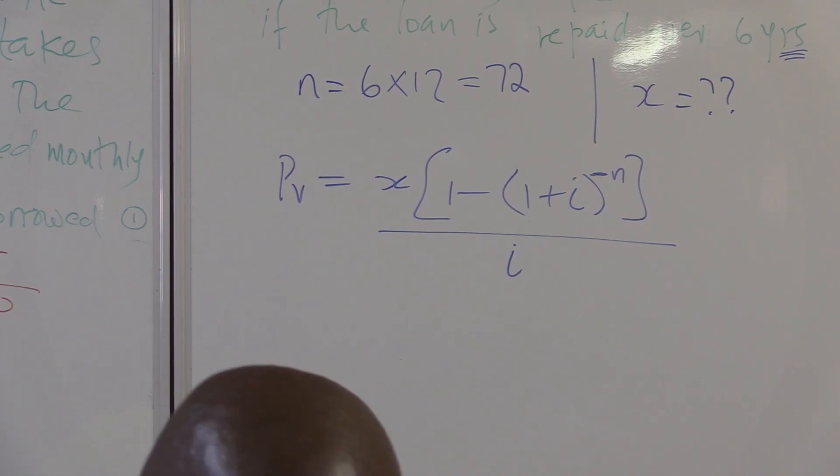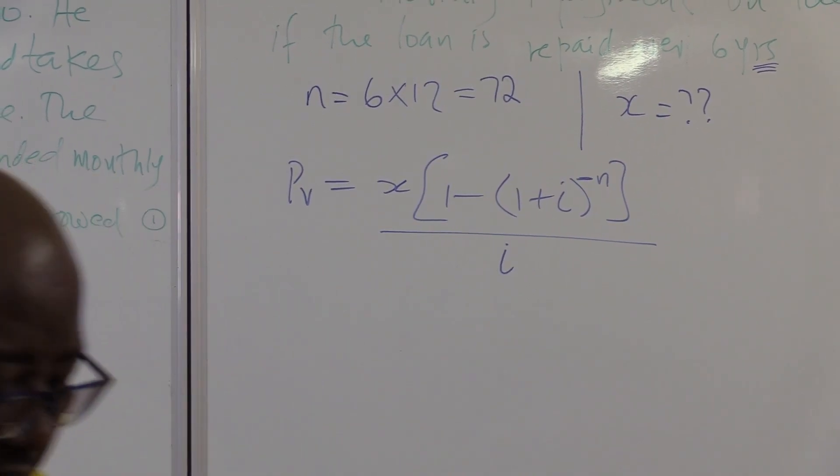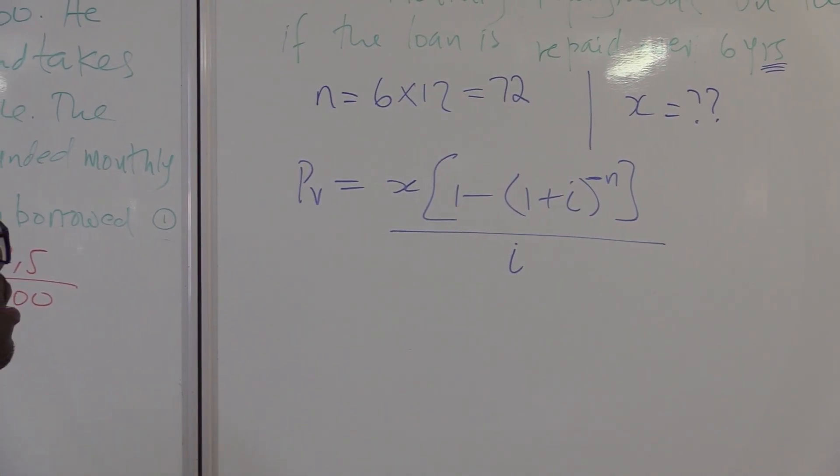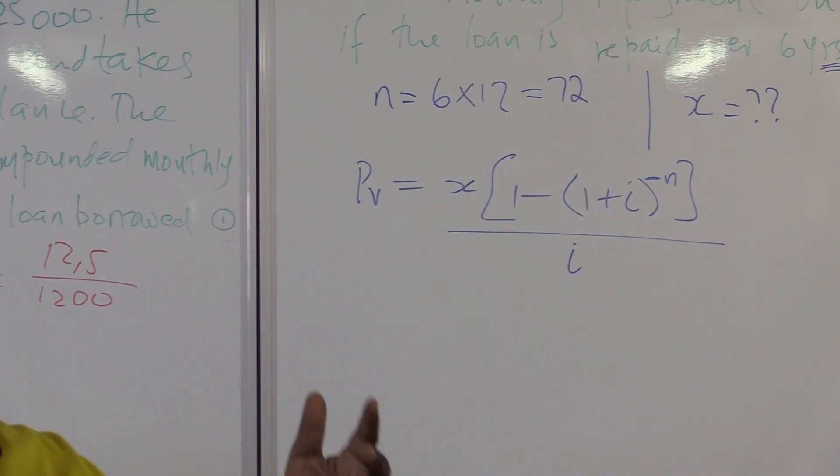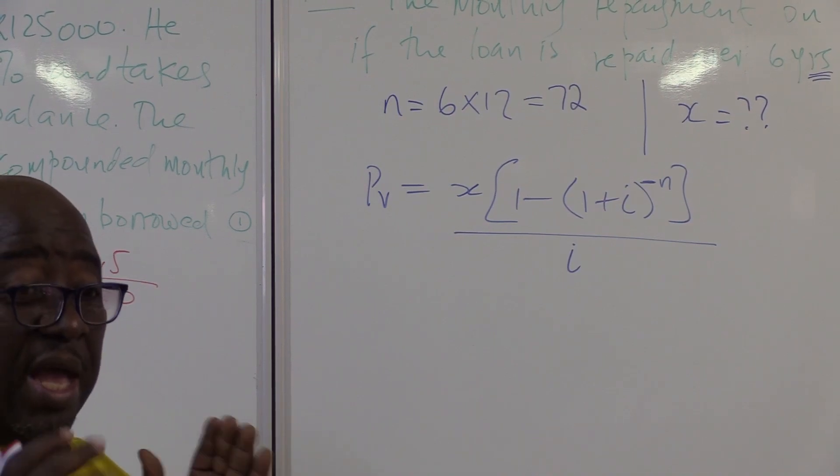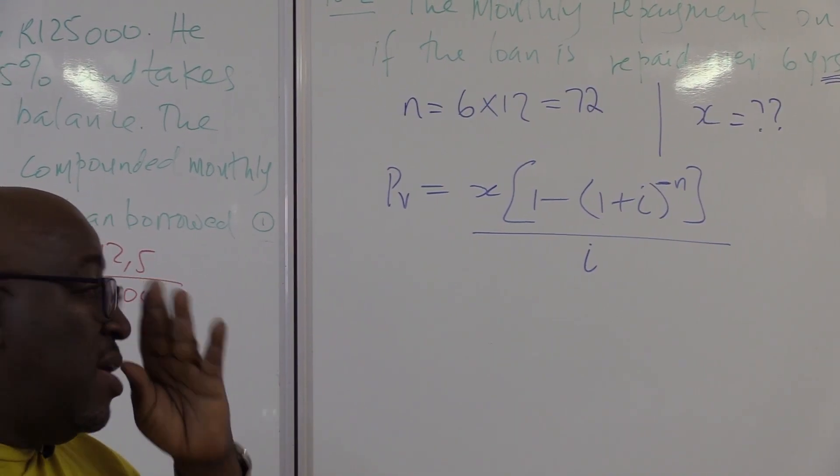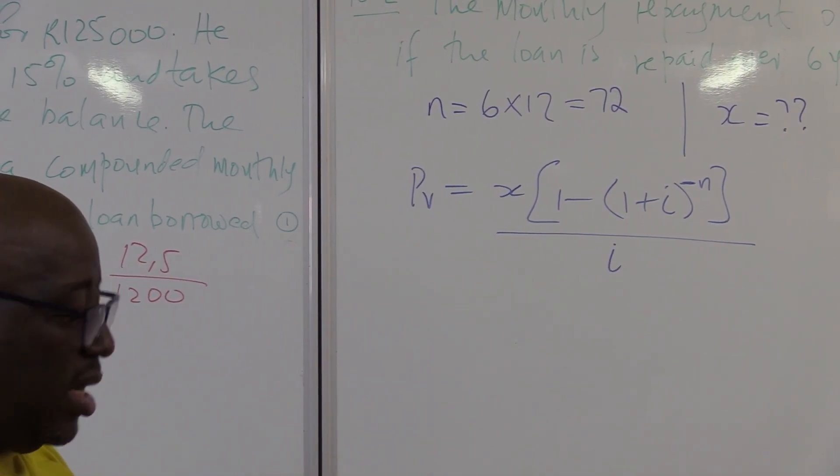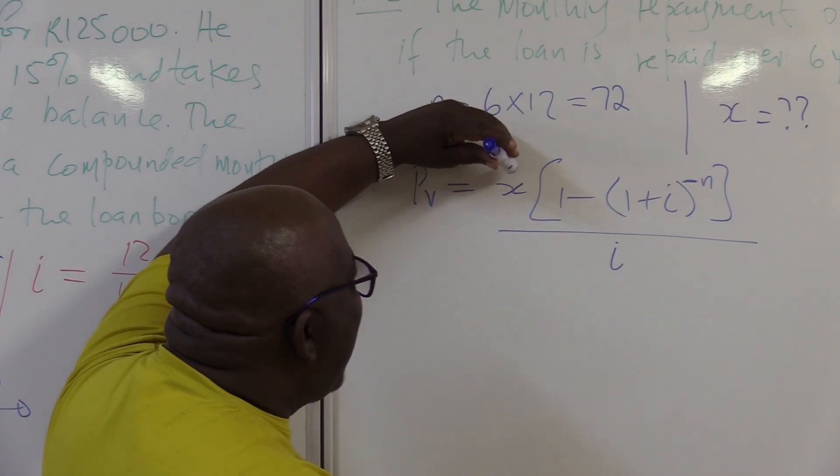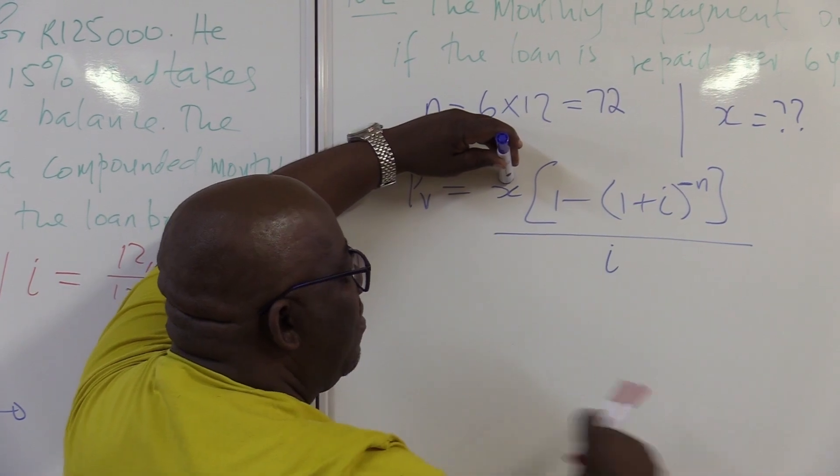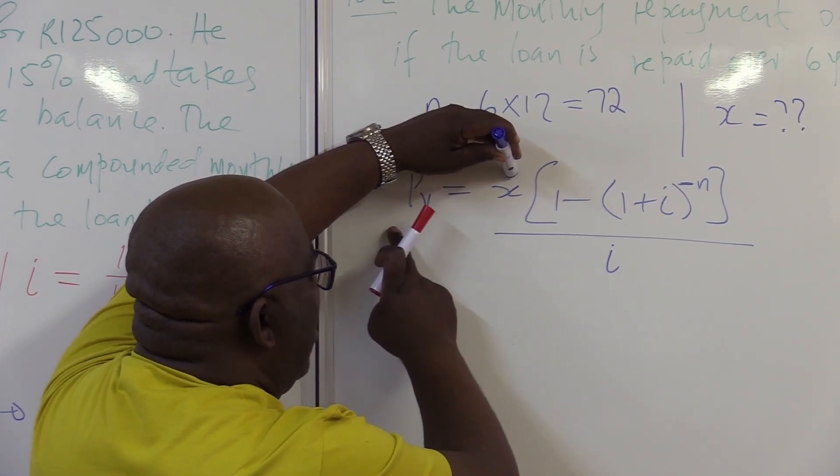But what is it that we're looking for in this particular case? I want us to look at this carefully. We're looking for the installments. This is the installments. I'll prefer that when we do the installments we make X the subject because we're looking for X. Let's do it together. Let's work on this together. This is what we're looking for. We want to leave X this side and remove everything. The first thing to remove is this one.